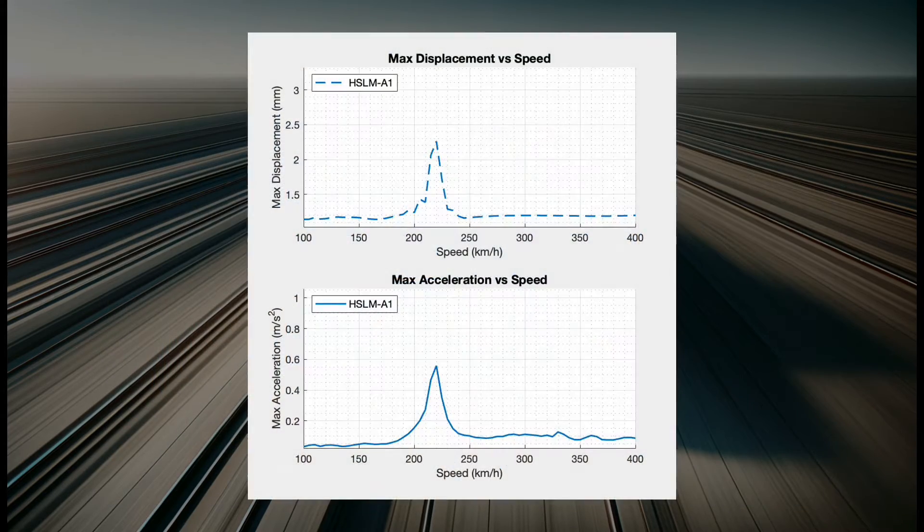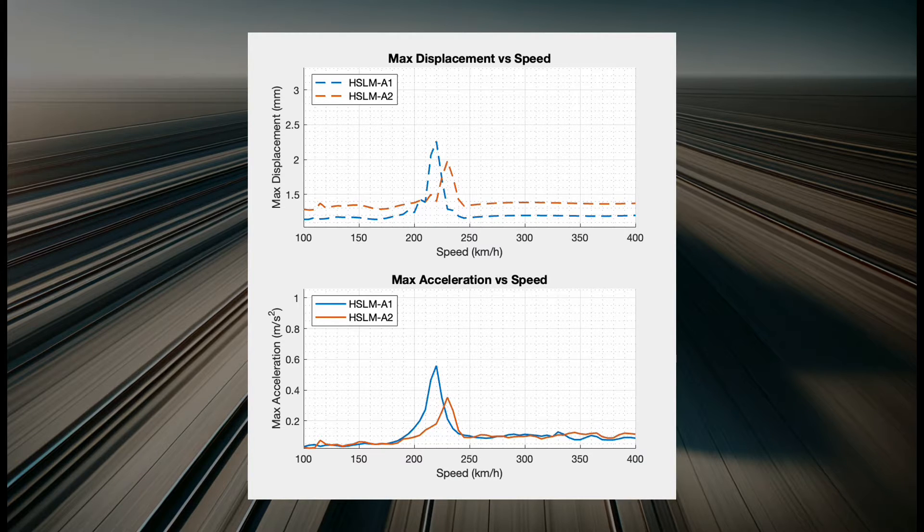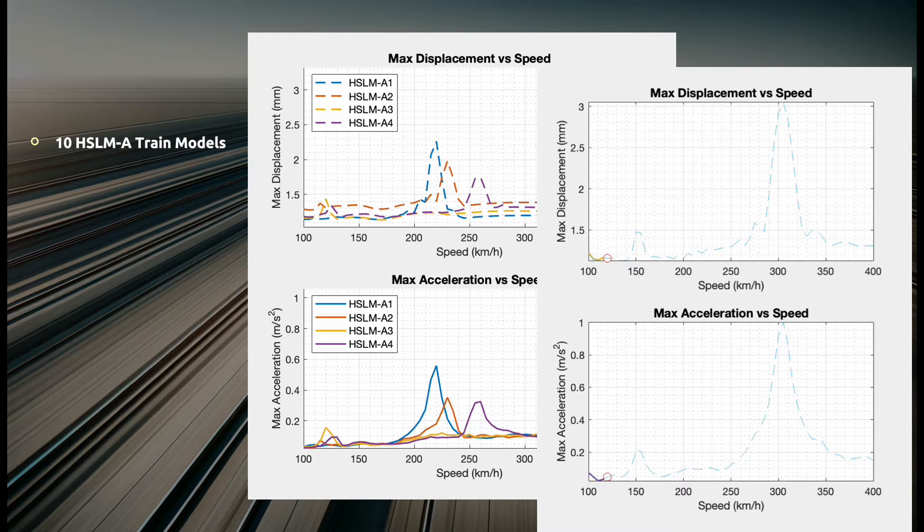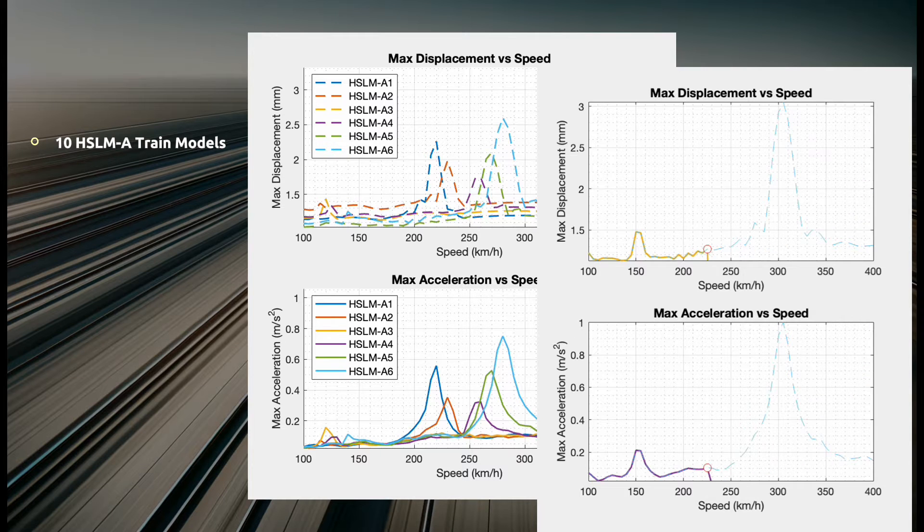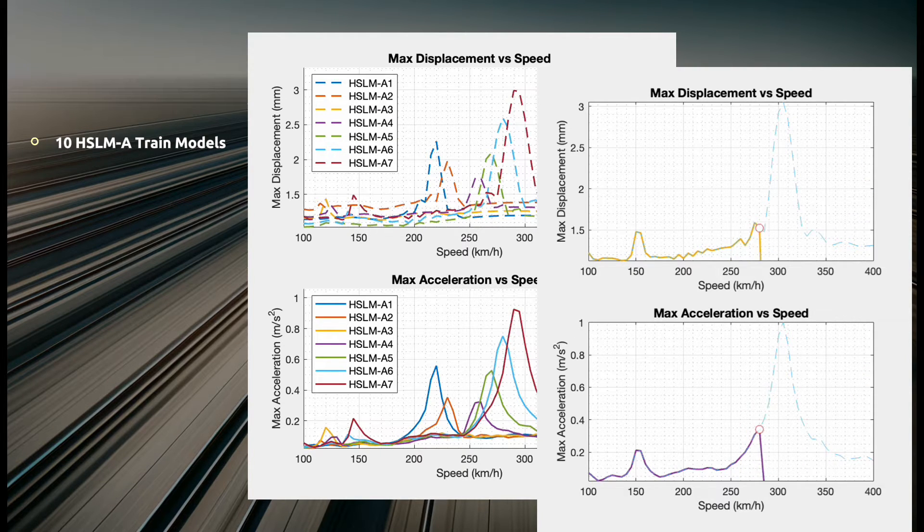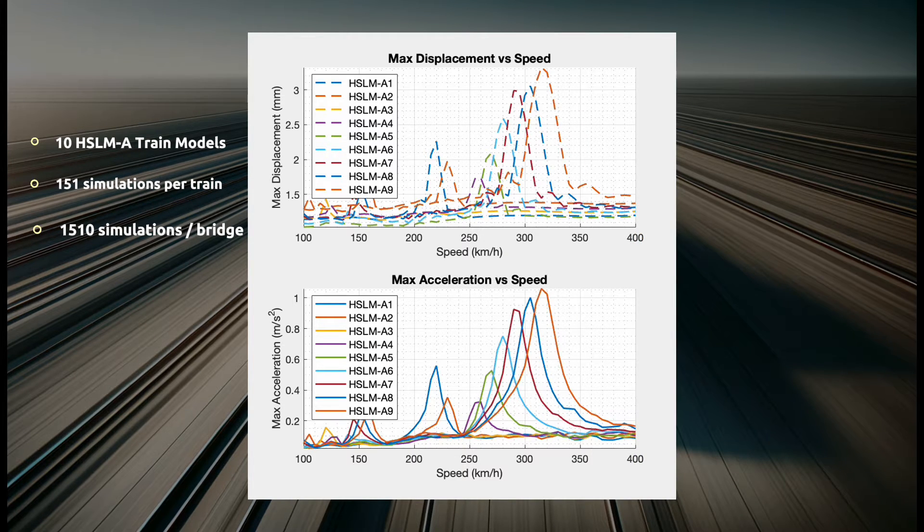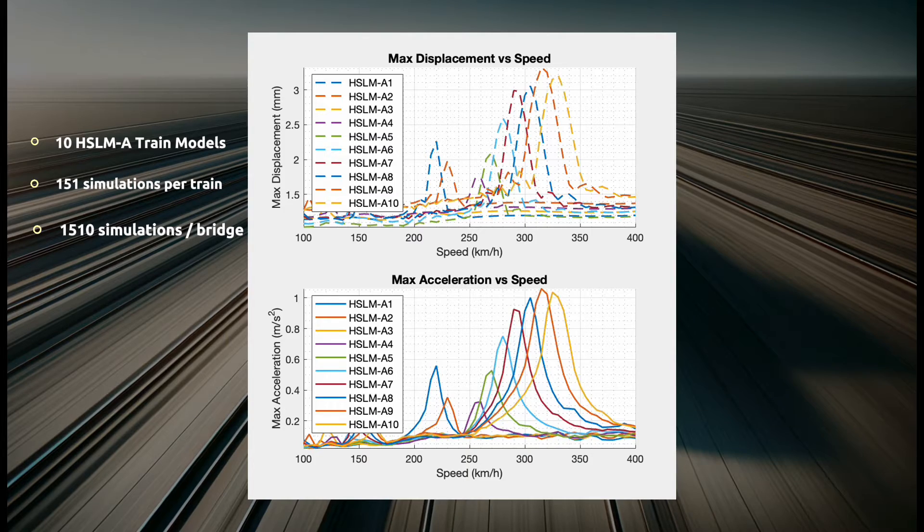Now imagine if we have to comply with Eurocode standards, which require the calculation of envelope curves for 10 different train models. To thoroughly evaluate the bridge's behavior under speeds ranging from 100 to 400 km per hour, we need to run numerous simulations. For each train model we run 151 simulations, totaling 1,510 simulations for the 10 different train models, as per the Eurocode standards.